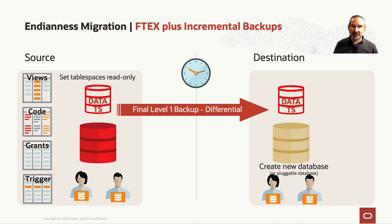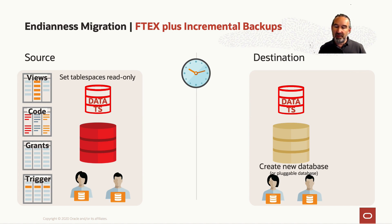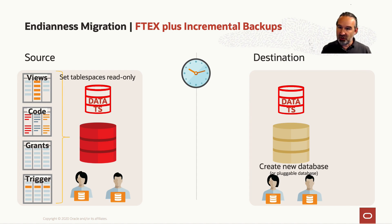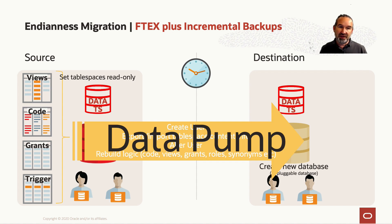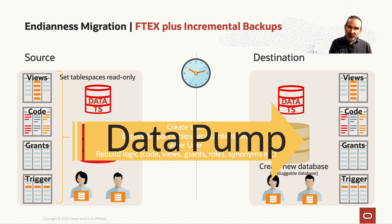The final downtime phase begins when we set the tablespaces read-only. We do the final level 1 differential backup, convert it, and merge it on the other side. Once merged, the files are fully consistent. Then we call Datapump, which rebuilds everything — all objects, code, grants, and users — on the destination side. We've tackled complexity: Datapump took over the manual work, and incremental backups worked seamlessly with this technique. At the very end, we set the tablespaces read-write.